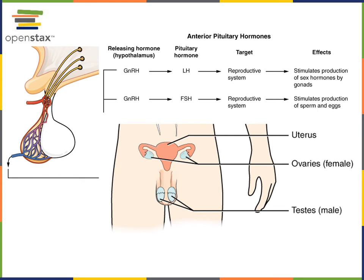The hypothalamic-pituitary-gonadal axis, or HPG axis, starts with the hypothalamus producing GnRH to stimulate the anterior pituitary to release LH and FSH — the tropic hormones that stimulate the gonads. LH, or luteinizing hormone, stimulates the production of steroid sex hormones, while FSH, or follicle-stimulating hormone, stimulates the production of sperm and eggs.